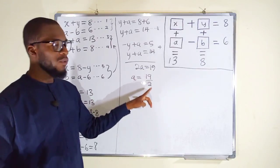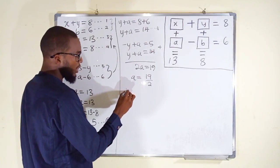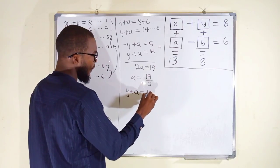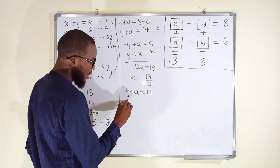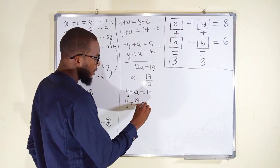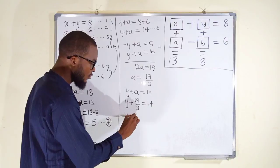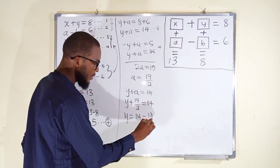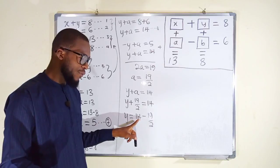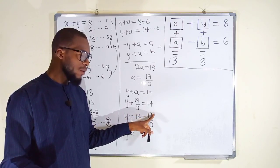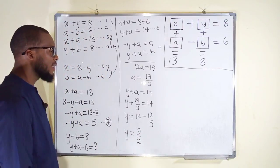Having obtained a equals 19 over 2, we substitute into equation 8 to find y. We have y plus 19 over 2 equals 14. Taking 19 over 2 to the right, y equals 14 minus 19 over 2. That gives y equals 28 over 2 minus 19 over 2, so y equals 9 over 2.